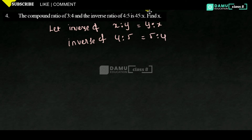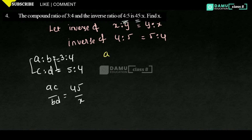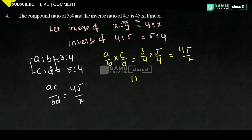Then what they are asking is the compound ratio of 3 is to 4 and 5 is to 4. Let A is to B equal 3 is to 4, and C is to D equal 5 is to 4. A by B into C by D equals 3 by 4 into 5 by 4. That gives 15 by 16 equals 45 by X.